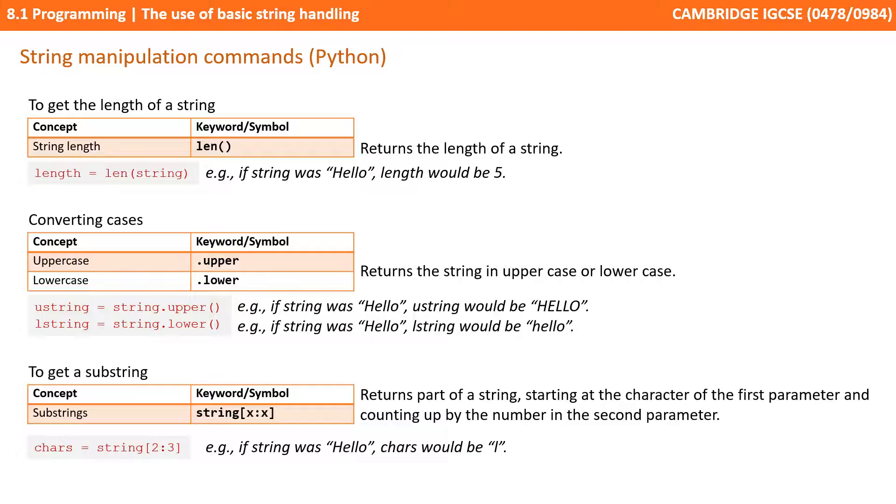Finally, we need to know how to extract a substring - take part of a string from a string. In Python, this uses something called slicing, but essentially they do the same thing. It returns part of a string starting at the character of the first parameter and counting up by the number in the second parameter.